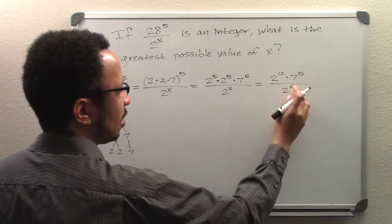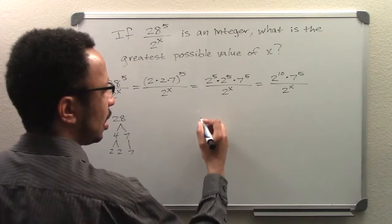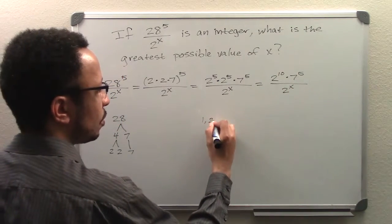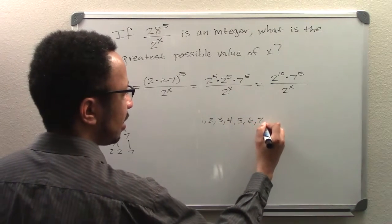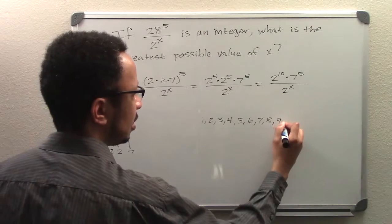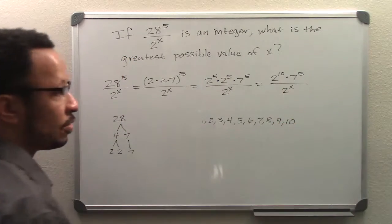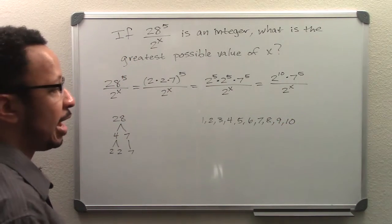As long as x equals 1, 2, 3, 4, 5, 6, 7, 8, 9, or 10, we'll still have an integer for this fraction.